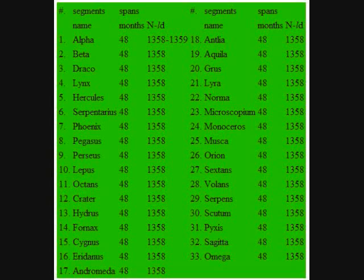Neptune is 4.5 billion kilometers, 30 AUs from the Sun. Leap year occurs every 6 Neptune years. Subtract one every 100 Neptune years. Add back one every 600 Neptune years. Placement: February A, 29 in Alpha.